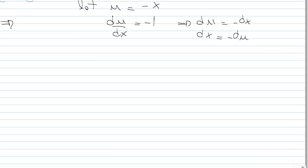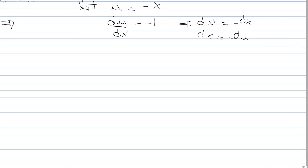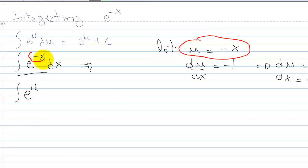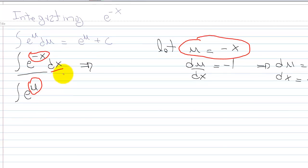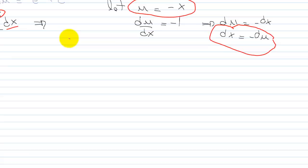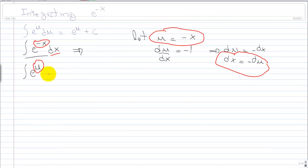Now let's substitute our u into our function. So this becomes the integration of e to the power of u, because u is equal to negative x — I have negative x right here, and I will substitute it right here. And then dx is equal to negative du, because I have to put all the terms in u and du. I cannot put e to the power of u and leave dx — that's not going to work. So now I substitute dx for negative du.